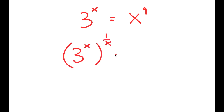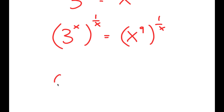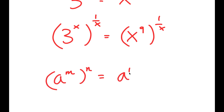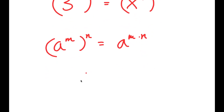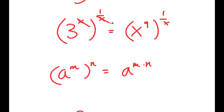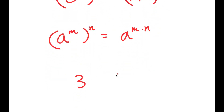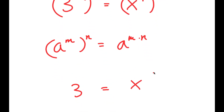So I have 3 to the power of x to the power of 1 over x is equal to x to the power of 9 to the power of 1 over x. Now if I have something in the form a to the power of m to the power of n, this is equal to a to the power of m times n. So I get 3, because these two cancel out, so just 3 is equal to x to the power of 9 over x.